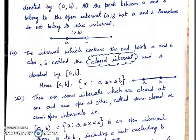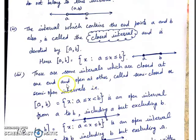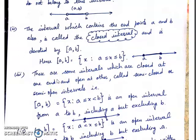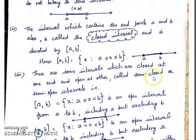But some intervals are open at one end and closed at the other. These are called semi-closed or semi-open intervals.